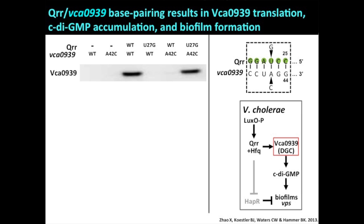This target, VCA0939, is a diguanylate cyclase enzyme. These take two GTPs, stick them together, and produce this intracellular second messenger called cyclic di-GMP, which is all the rage in microbiology now. In tons of bacteria, when cyclic di-GMP levels are high, bacteria stick; when they're low, they release from a surface and swim away. So cyclic di-GMP is thought to be a switch for sticking or swimming.